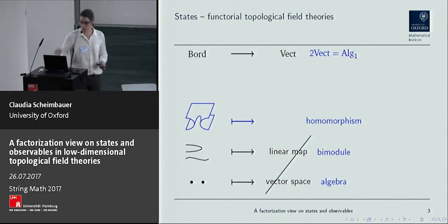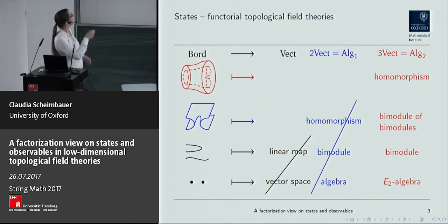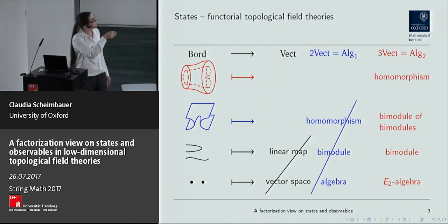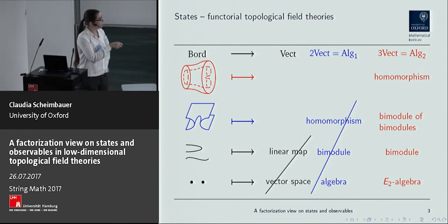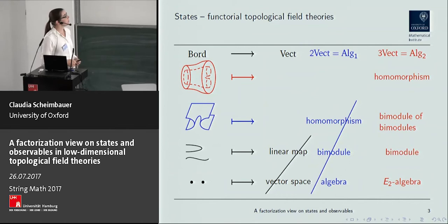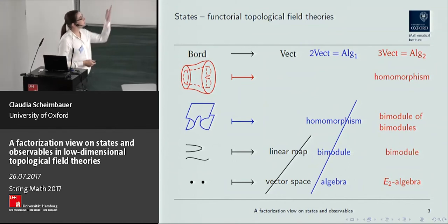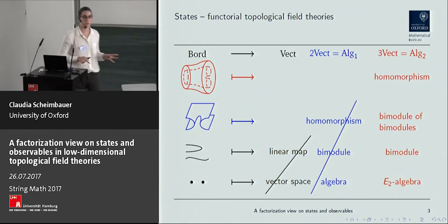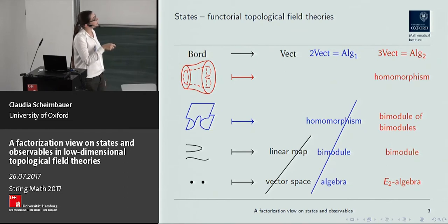Going up in dimension to three dimensions, we want to add even more layers. One choice for a three-vect is something I will call ALGE2, whose objects are E2 algebras, with a notion of bimodules, bimodules of bimodules, and homomorphisms — so again in these three layers we recover something like what we had before. These are not the only possible two-vects or three-vects, but these are the ones we'll be talking about today. Another good example for a two-vect would be k-linear categories, functors, and natural transformations, just as an outlook.